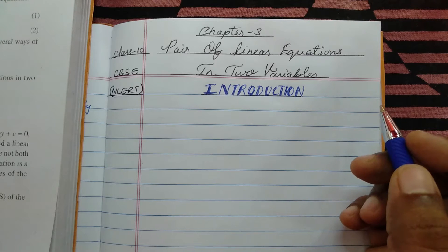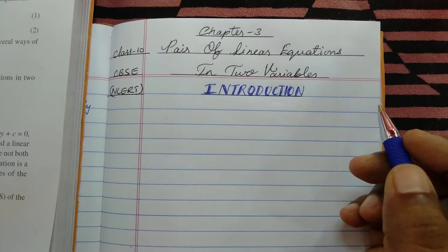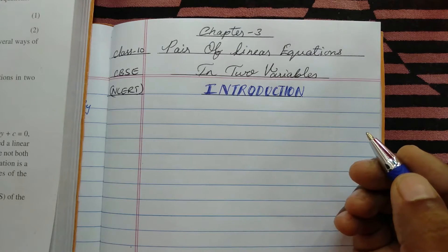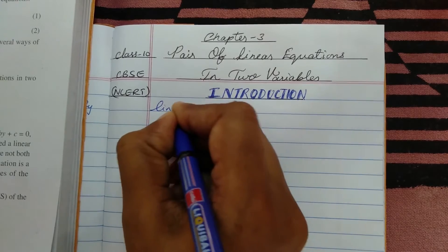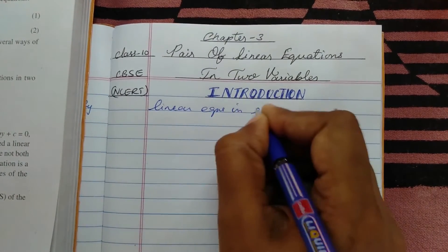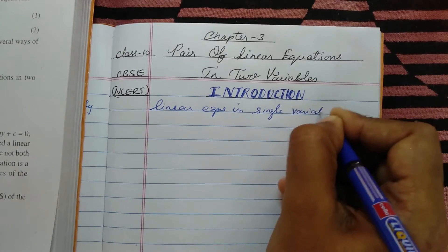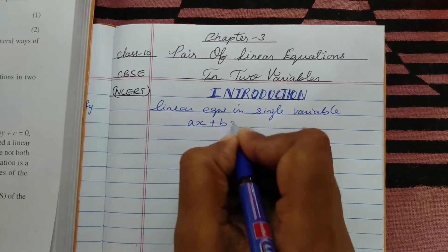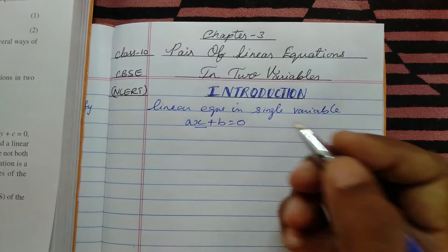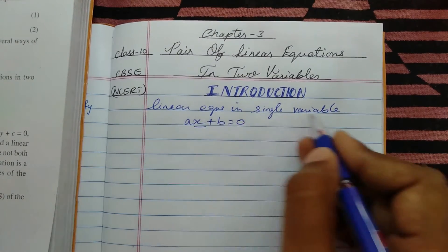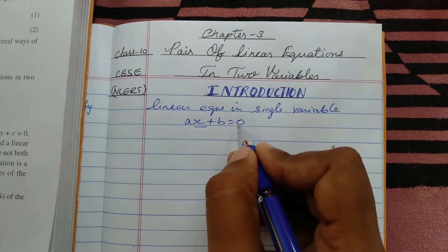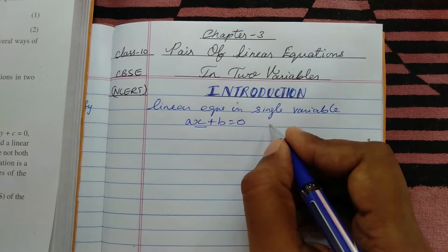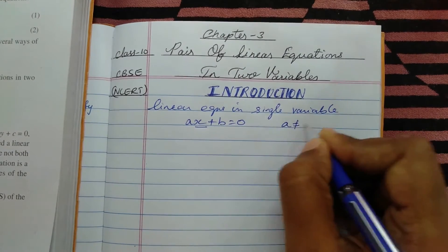We all know what an equation is — it is a statement or expression which states that the LHS is equal to the RHS. A linear equation in single variable is generally expressed in the form ax + b = 0, where x is the variable and a is the coefficient of x.